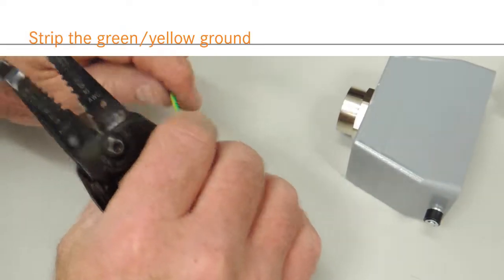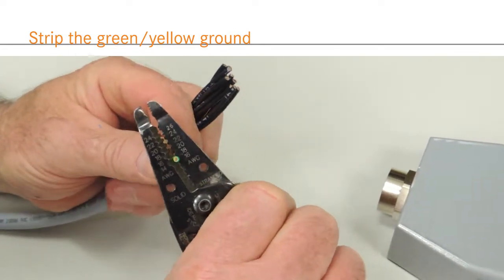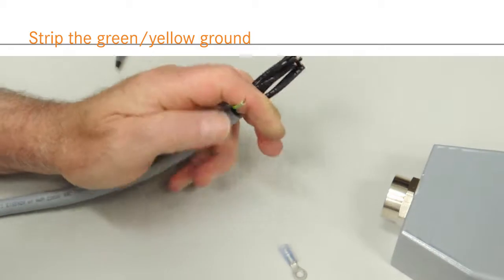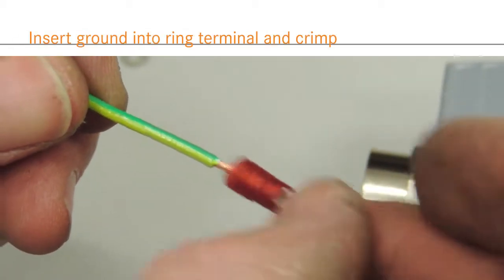To terminate the green-yellow cable ground, measure against the ring terminal and strip the wire 3 eighths of an inch. Insert the wire into the terminal. You should be able to see the stripped wire through the end of the ring terminal.